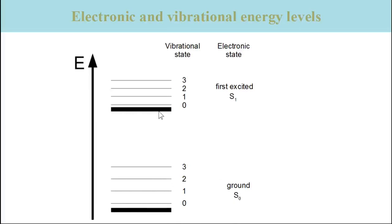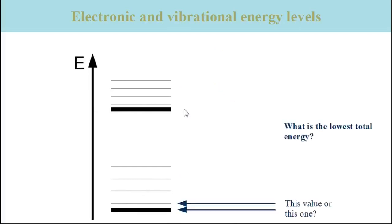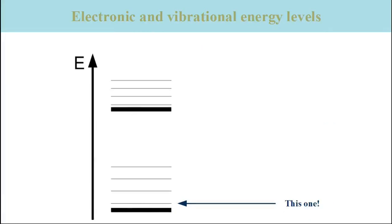The upper bold line illustrates the energy level of the electrons in the first excited state, and the vibrational levels belonging to the electronically excited state are depicted above. Now, what is the lowest total energy of the molecule — is it the bold line level or the lowest thin line level? The right answer is the lowest thin line, because it corresponds to the lowest energy of the nuclear vibrations and electrons together.